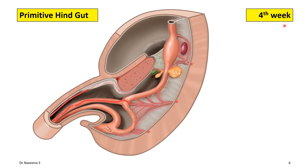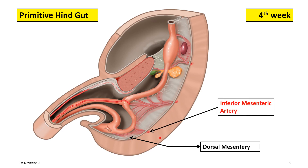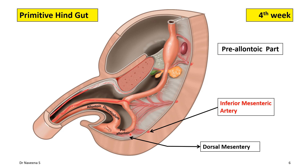During the fourth week of development, the primitive hindgut is suspended by dorsal mesentery, through which the artery of the hindgut — that is, the inferior mesenteric artery — passes to supply the hindgut. The allantoic diverticulum is an endodermal outgrowth from the ventral wall of primitive hindgut, and it grows into the developing umbilical cord. Depending on the position of the allantoic diverticulum, the primitive hindgut can be divided into two parts: a cranial part known as the pre-allantoic part, and a caudal part known as the post-allantoic part.